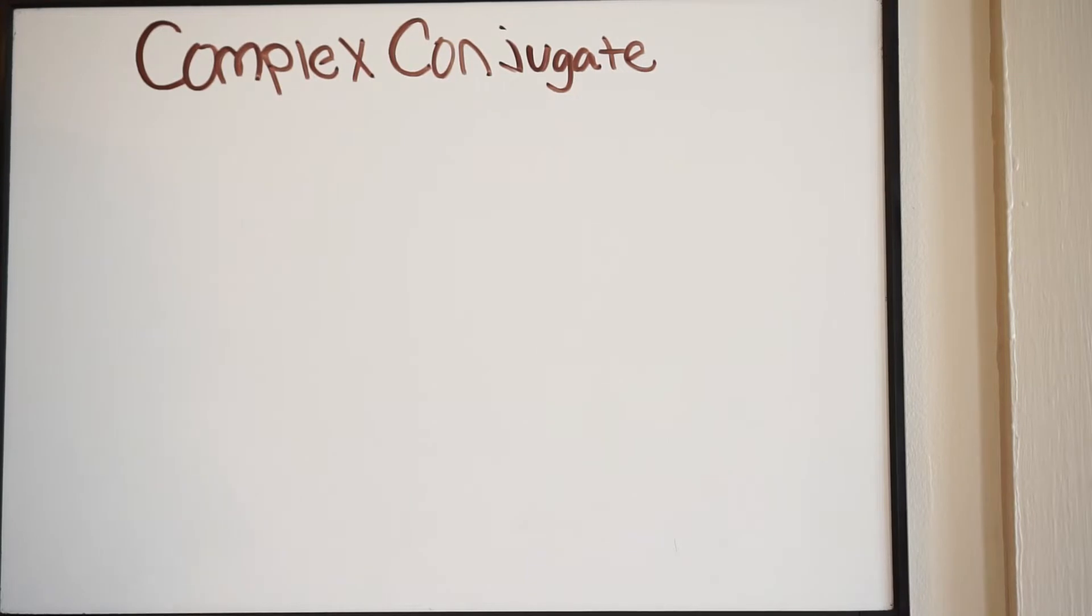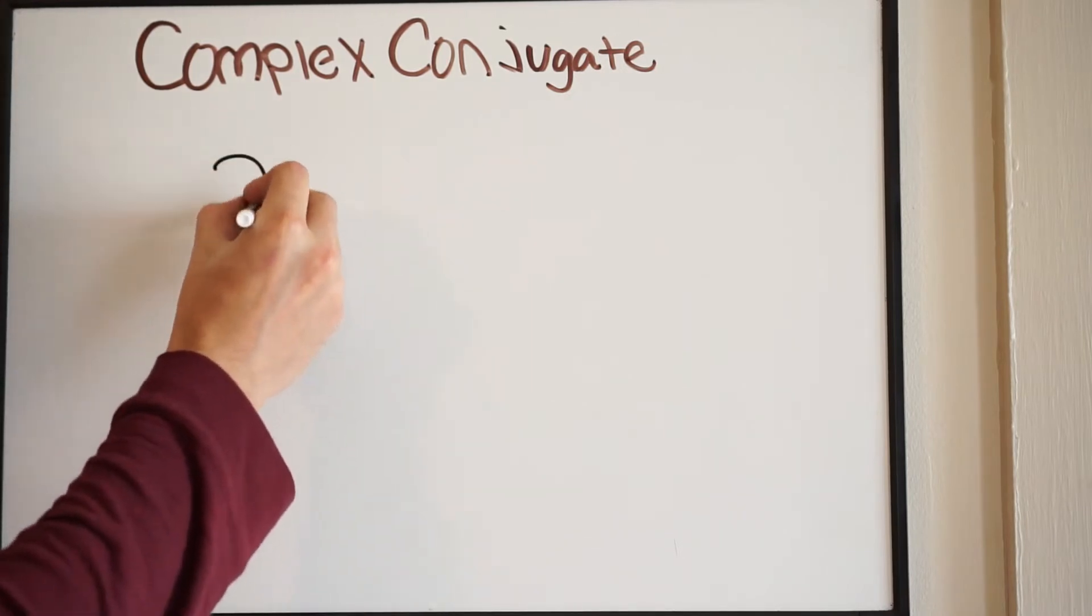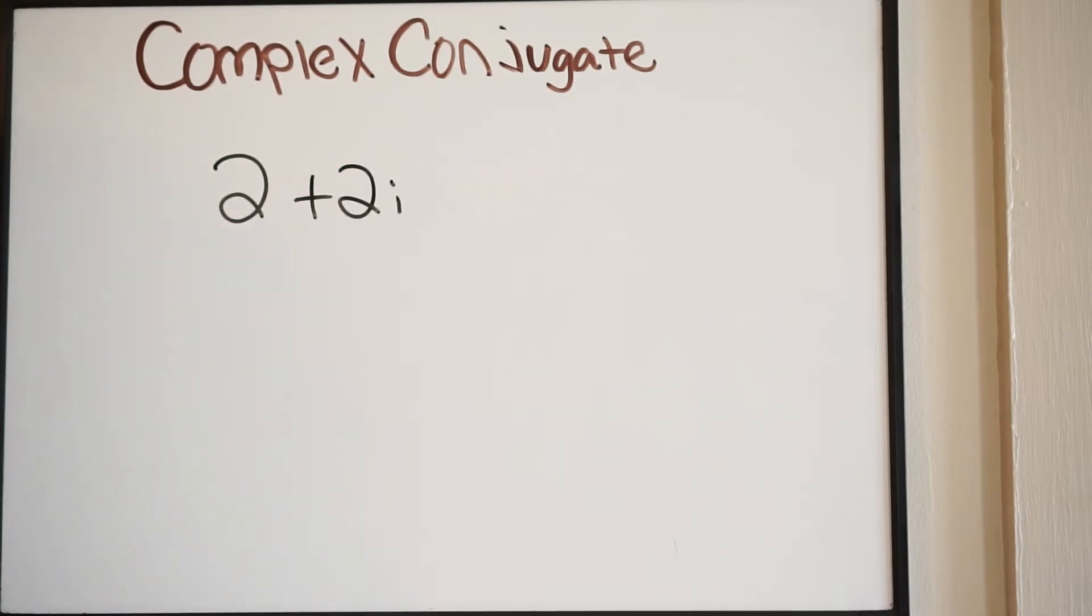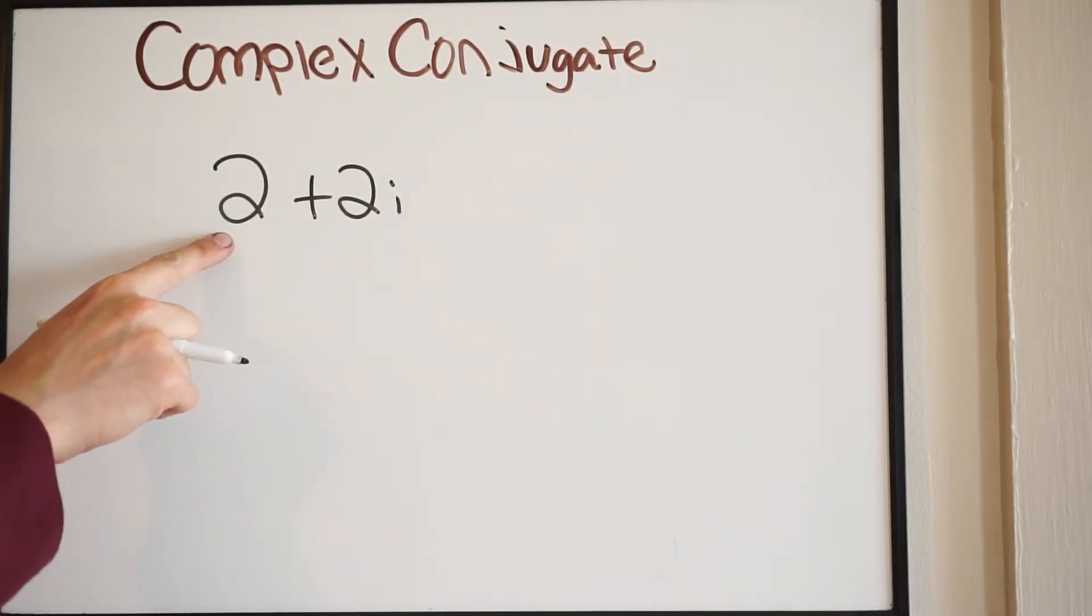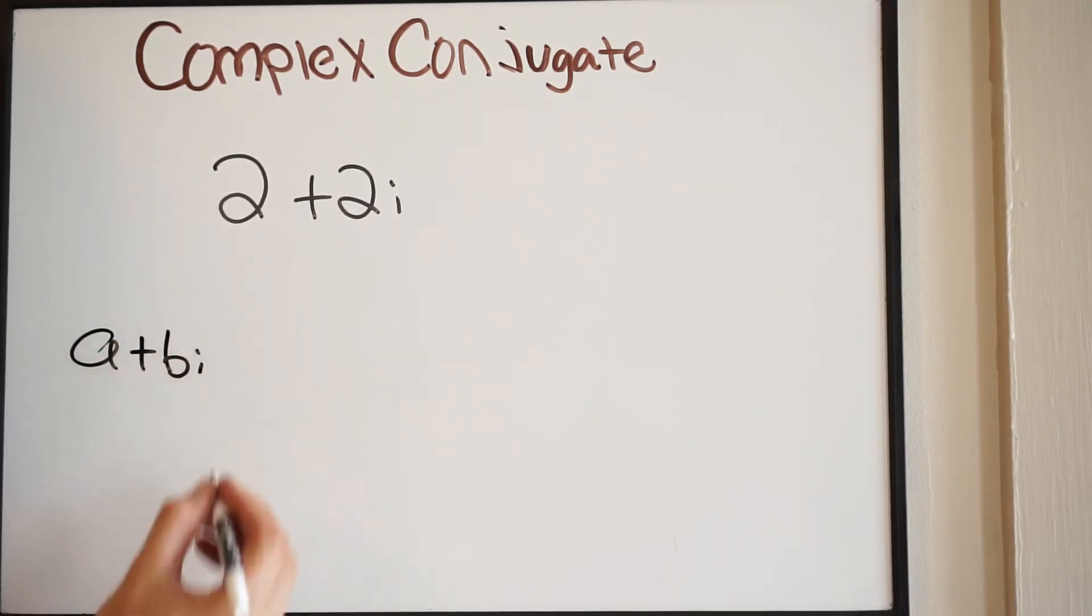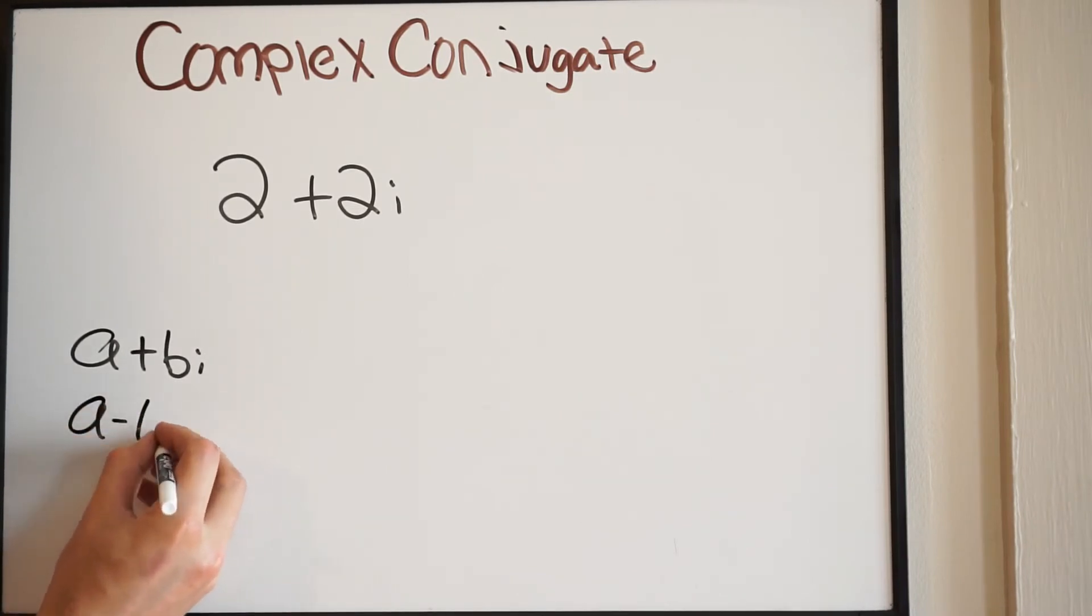So let's say that you're given the following complex number. Let's say you have 2 plus 2i. Now I know that this is a complex number because I have a real part, being our 2, and I have an imaginary part, being 2i. So we know that complex numbers are written as a plus bi. It can also be written as a minus bi.